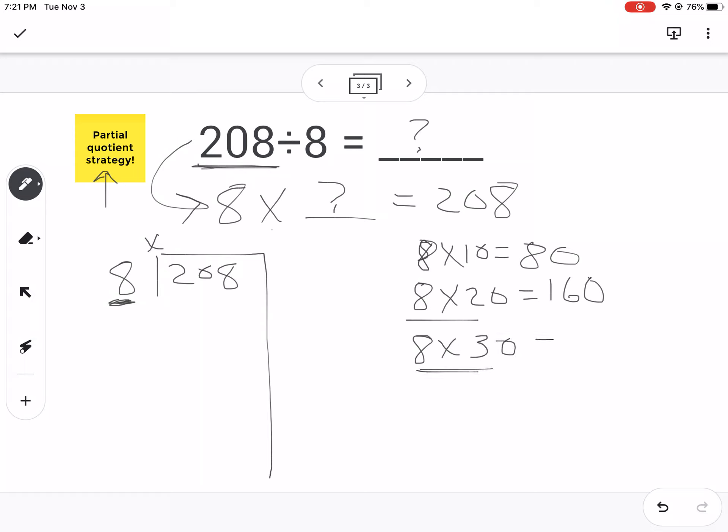So 8 times 3, that's 24. That's 240. So that's more than 208. So I'm actually going to stick with this one right here. 8 times 20 is 160.